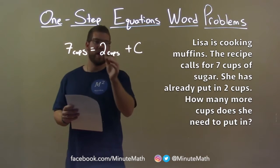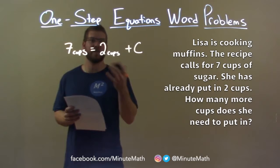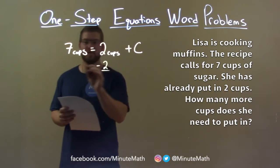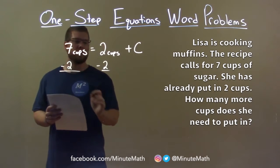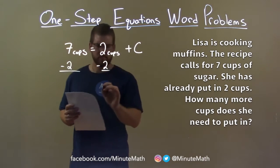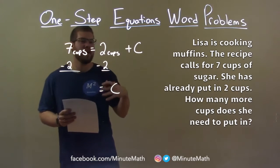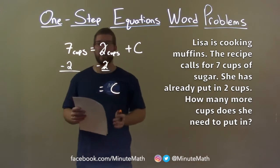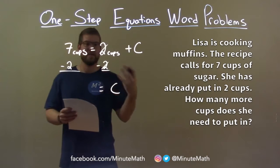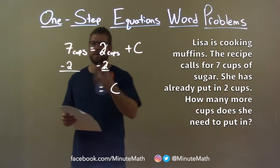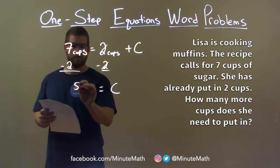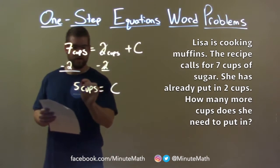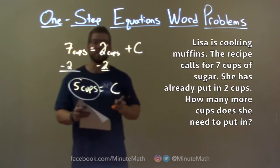Now we just have to solve for C. We're adding two to it, so the opposite of addition is subtraction. Subtract two cups from both sides, leaving C by itself. Seven minus two is five, so five cups is our final answer.